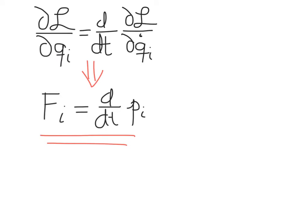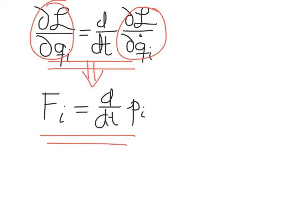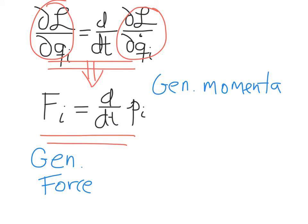Now, these don't always have to be forces and momenta in the way that we're used to thinking. Instead, we can imagine that whatever the qi derivative of the Lagrangian is, it represents a kind of force — in many cases a linear force, in other cases a torque or some other kind of change. Similarly, the qi dot derivative of the Lagrangian represents a momentum — very often a linear momentum, but sometimes an angular momentum. So the Euler-Lagrange equation really relates a kind of force to a change in a kind of momentum. We refer to the left-hand side as a generalized force and the right-hand side as a generalized momentum.